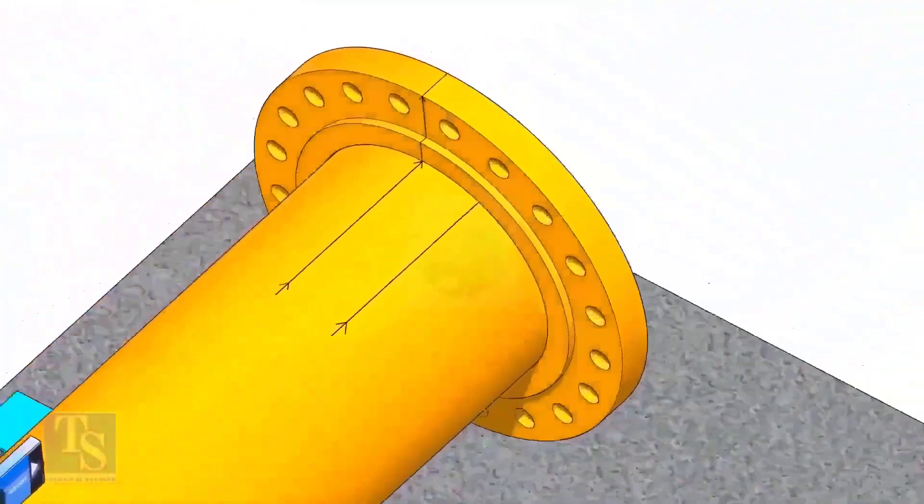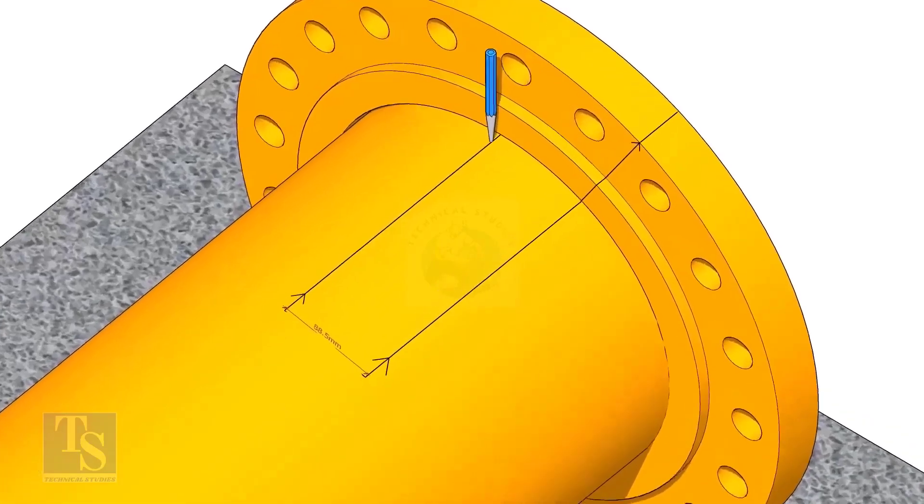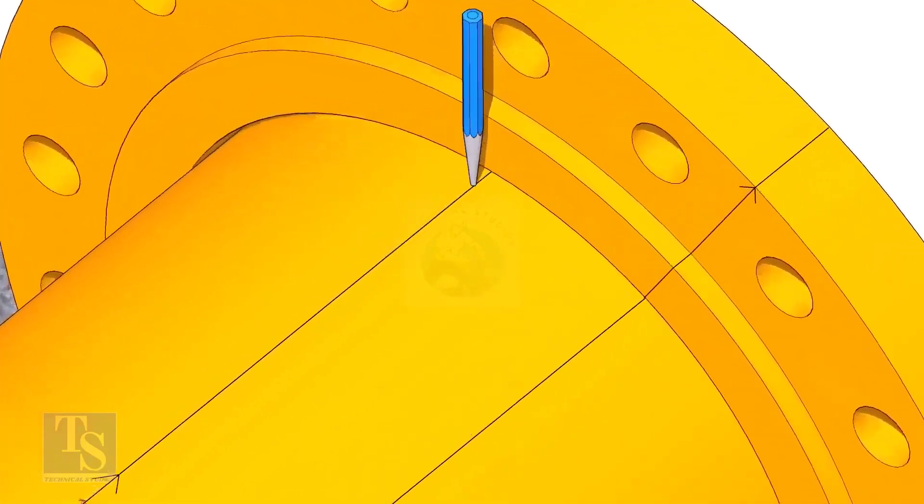Put the flange on the pipe. Rotate the flange until the center line on the flange and the 25 degree line on the pipe comes in a line. Don't forget to punch mark the center lines.